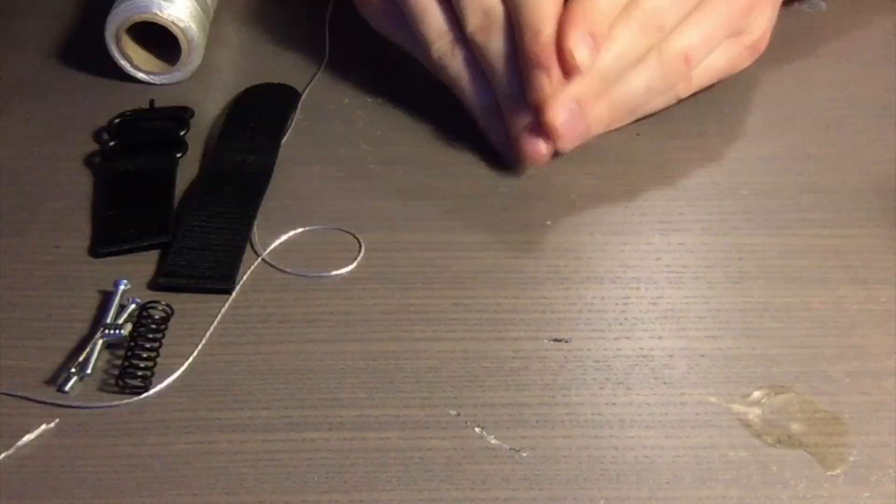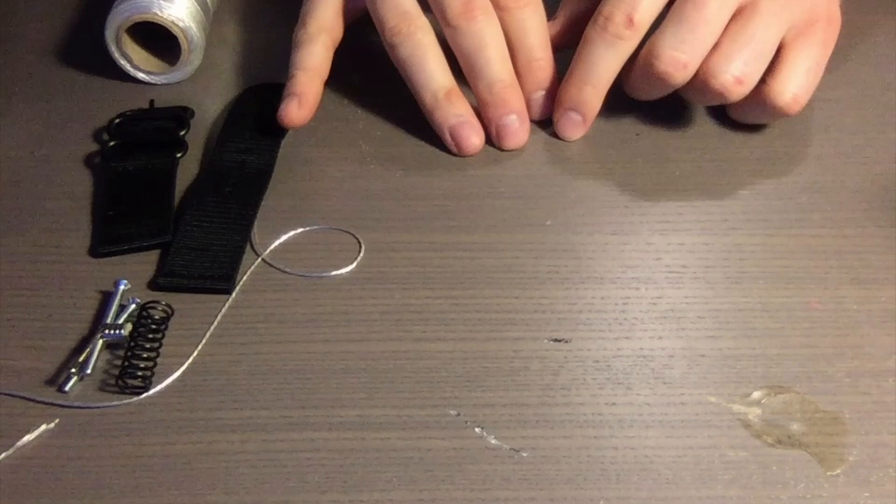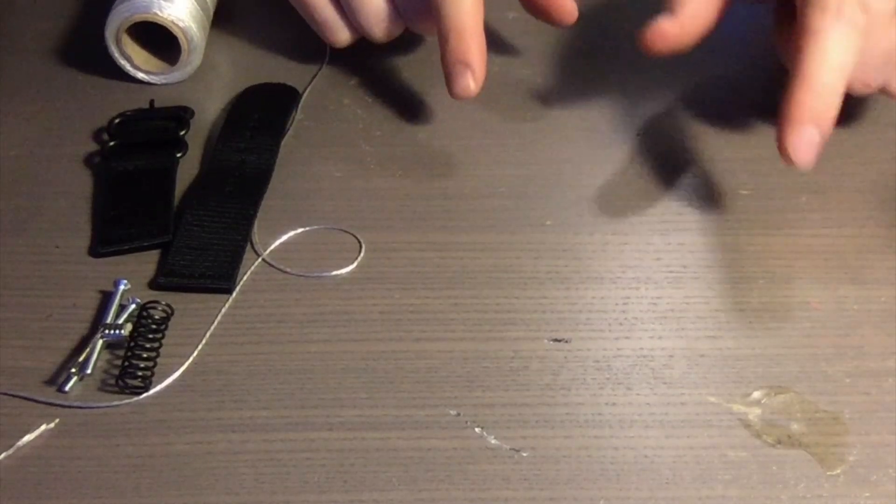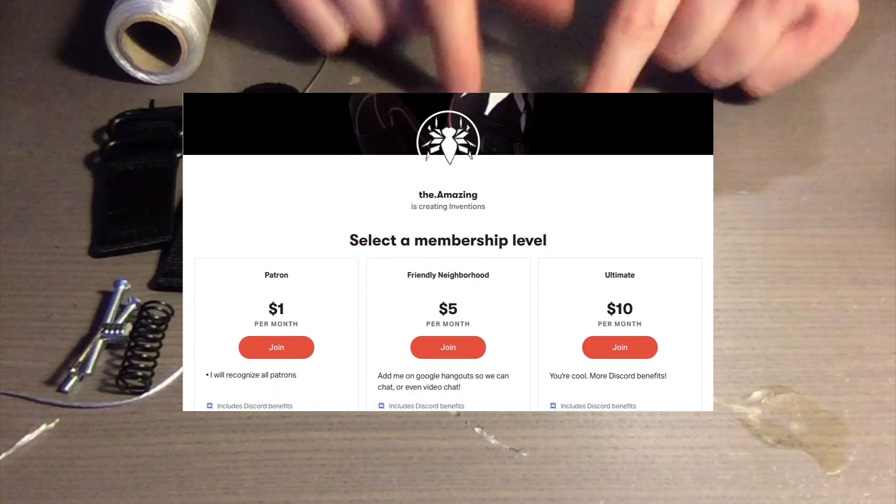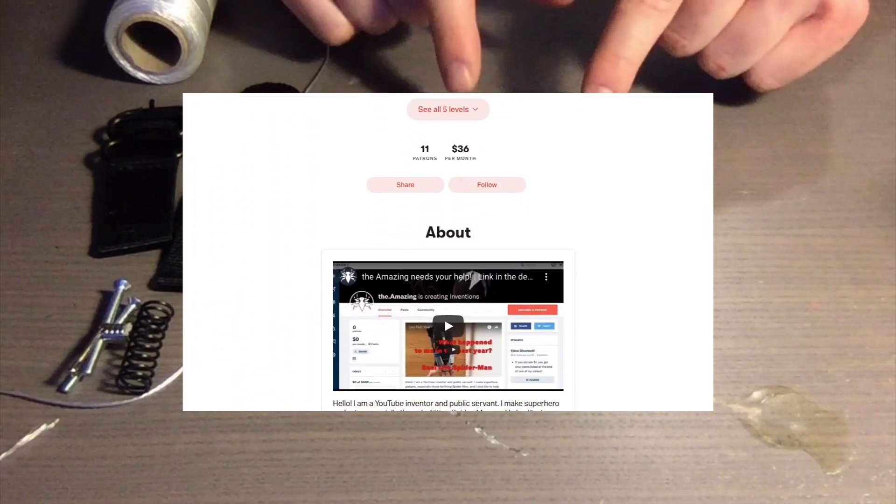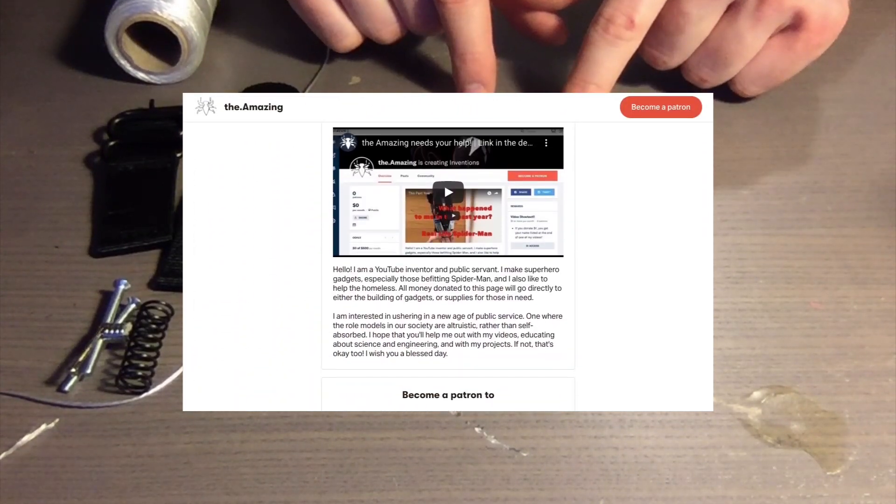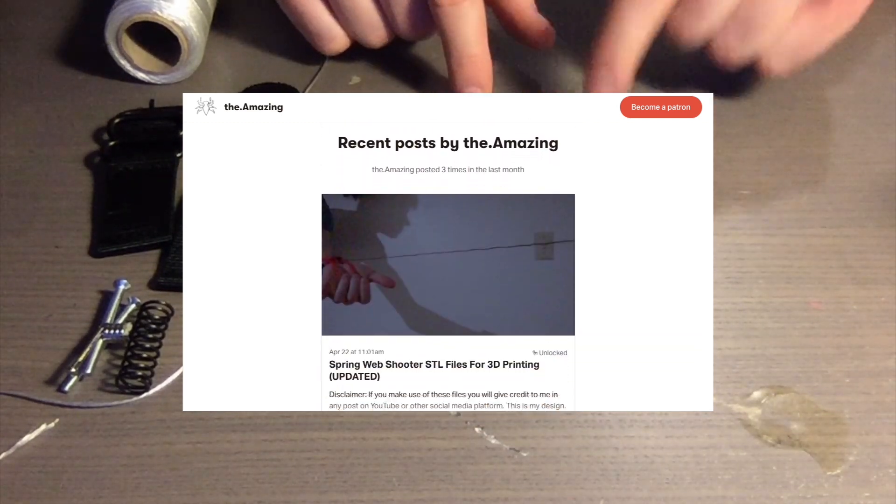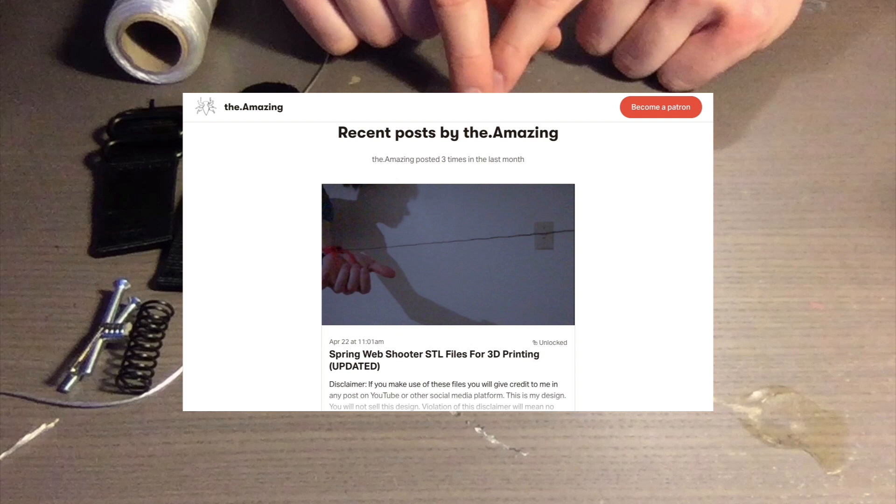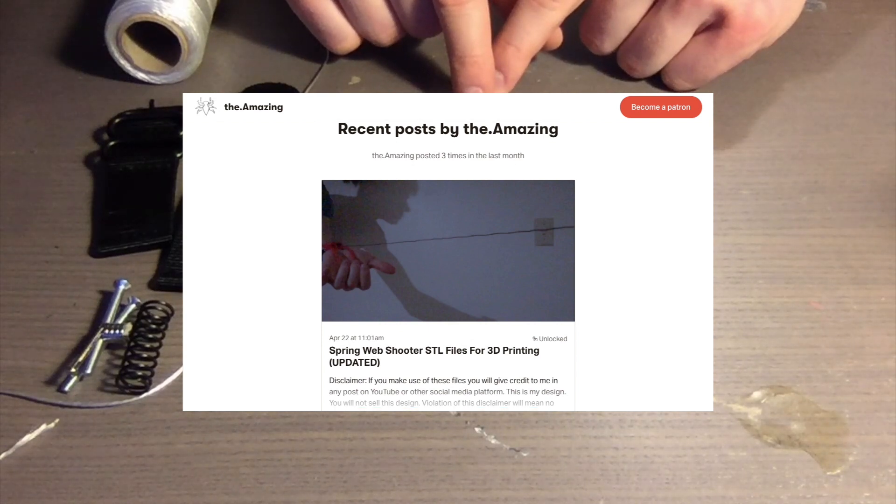The rest of the web shooter has 3D printed parts and you can find those 3D printed parts on my Patreon page. You can donate just as little as one dollar a month to get access to all the STLs. I'm going to be posting this project on there right now, but I'm also going to be posting STLs for the tentacle project and upcoming projects.